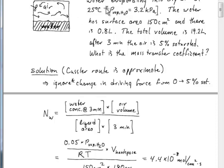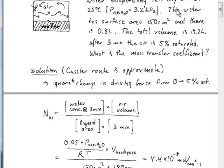The basic idea: water is evaporating into dry air, initially dry at 25°C, where the vapor pressure of water is 3.2 kPa — very low relative to atmospheric. The water has a surface area of 150 cm². The water initially occupies 0.8 liters at the bottom of the vessel, with a total volume of 19.2 liters. After three minutes in contact with the initially dry air, the air reaches 5% saturation. The question is: what is the mass transfer coefficient?